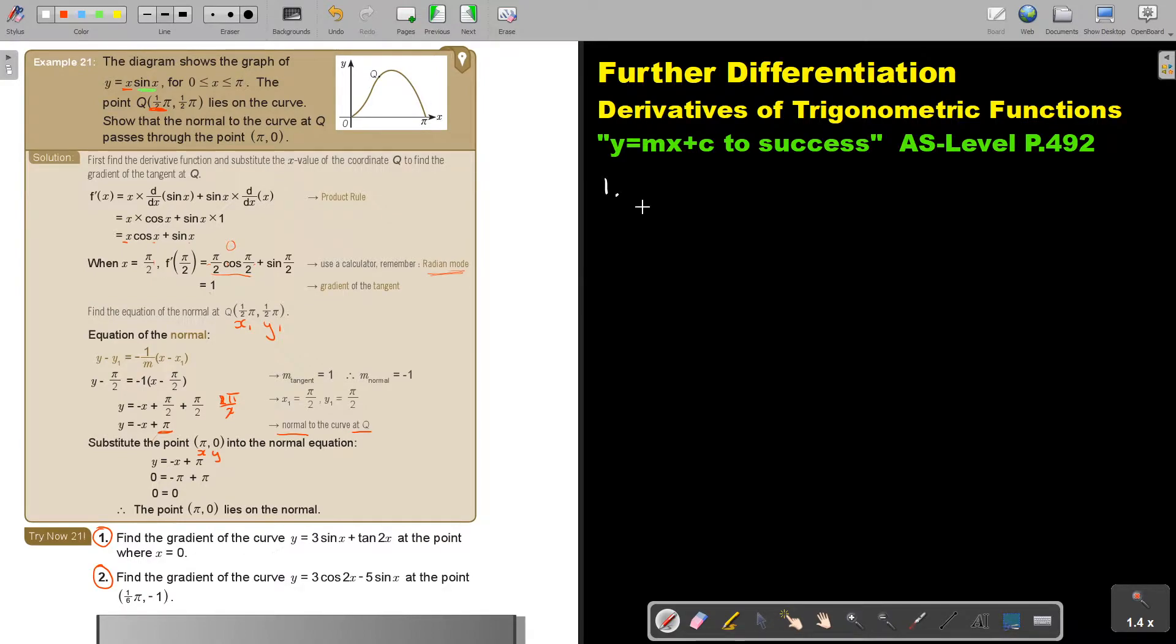Find the gradient of the curve. The first thing that we are going to do is we are always going to differentiate first. So if I differentiate, then dy by dx equals 3 cos x plus 2 sec squared 2x. There is my derivative function.